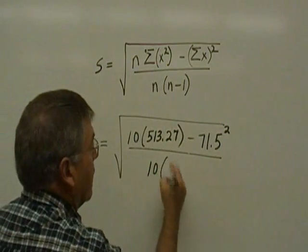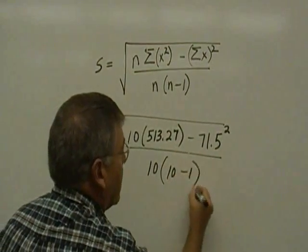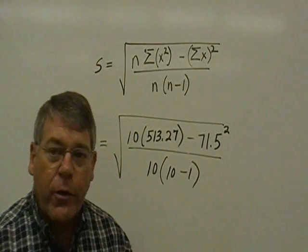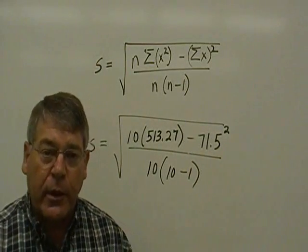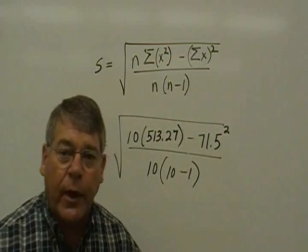On the bottom, we have n, which is 10, times 10 minus 1. Now, I call this the plug-in step, and I want you to write this on your paper and on your test.